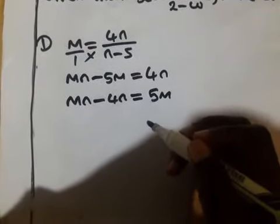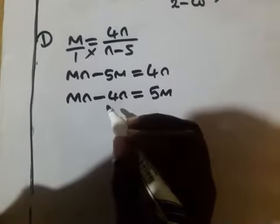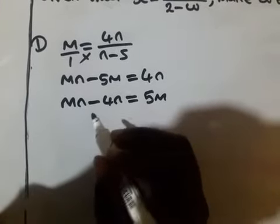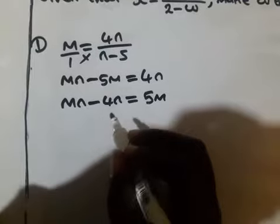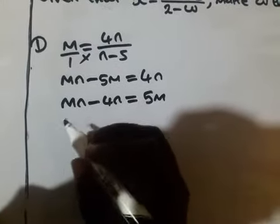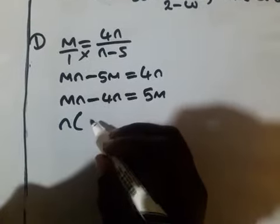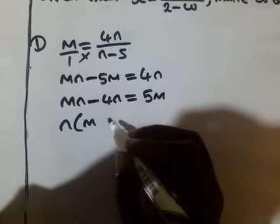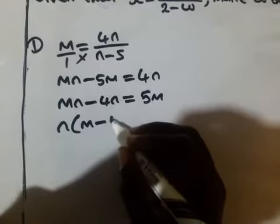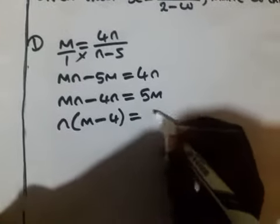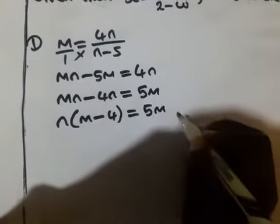At this point, you have to factorize mn, because it is what you are making a subject. So n out, then you remain with m minus 4, which is equal to 5m.